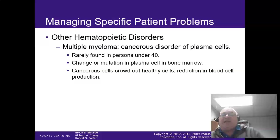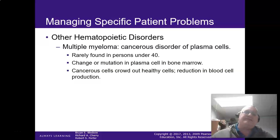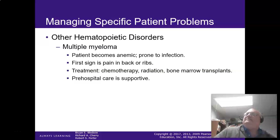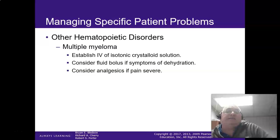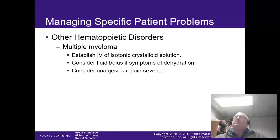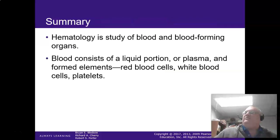Multiple myelomas: these are cancers — disorders of the plasma cells — very rarely found in people under the age of 40. It's a cancerous growth that reduces red blood cell production, making patients essentially anemic. They're also prone to infection. Treatment usually requires chemotherapy, radiation, and sometimes even a bone marrow transplant. For our pre-hospital care, it's supportive: get an IV started, control fluid volumes unless they're dehydrated, and fentanyl for pain management is a good choice.